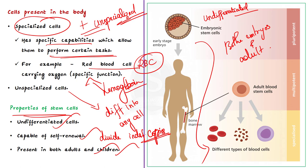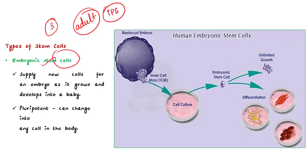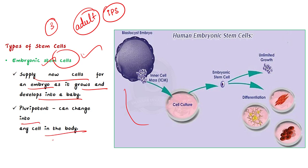Now let us see the different types of stem cells based on their formation at different times of human lives. There are three types: embryonic stem cells, adult stem cells, and induced pluripotent stem cells. Firstly, embryonic stem cells supply new cells for an embryo as it grows and develops into a baby. These stem cells are said to be pluripotent, which means they can change into any cell in the body.